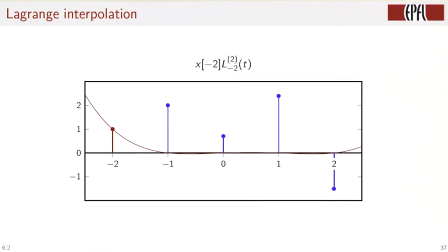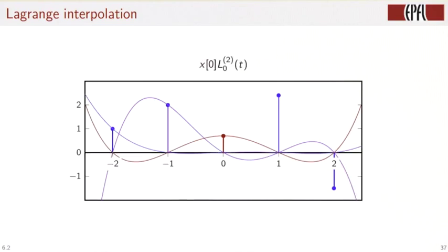Let's do this now. First Lagrange interpolator centered at minus 2, then at minus 1, at the origin,